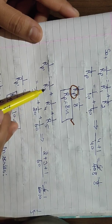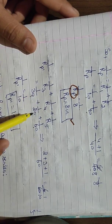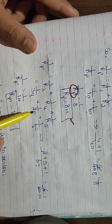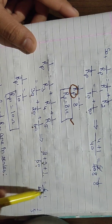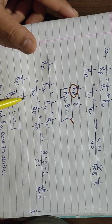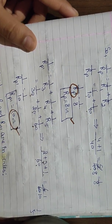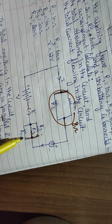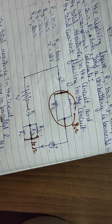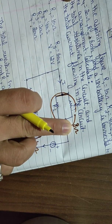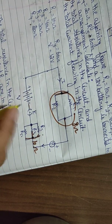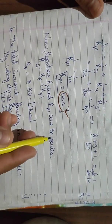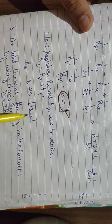Next, R3, R4, R5 are in parallel: 1/Rp' = 1/R3 + 1/R4 + 1/R5 = 1/30 + 1/20 + 1/60. LCM of 60: = 2/60 + 3/60 + 1/60 = 6/60 = 1/10. So Rp' = 10 ohm. Now the two equivalent resistors Rp = 8 ohm and Rp' = 10 ohm are in series: total resistance = 8 + 10 = 18 ohm.